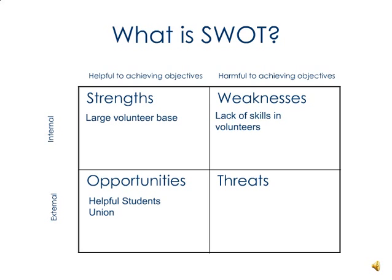An opportunity might be a very helpful students' union — an SU who can financially support you, who are supportive of your activities and really understand what you're trying to achieve. A threat might be that your university is becoming increasingly secular: they don't want prayer rooms on campus, they don't want Islamic or any religious activities, and you might feel some tension there. That's an example of a threat.